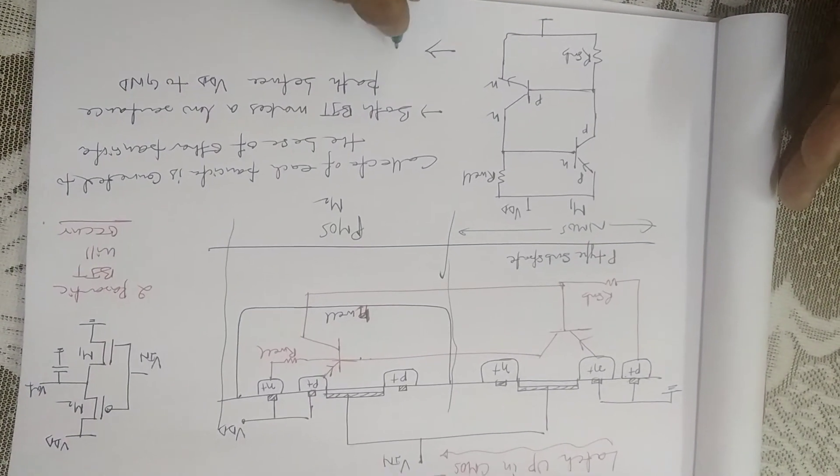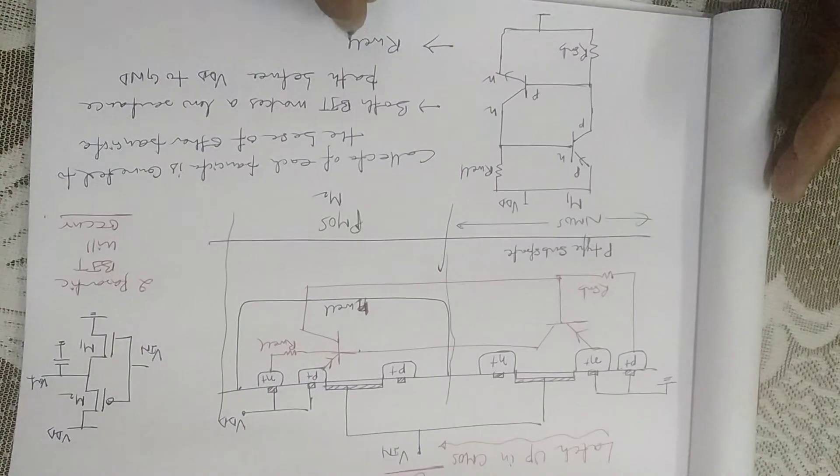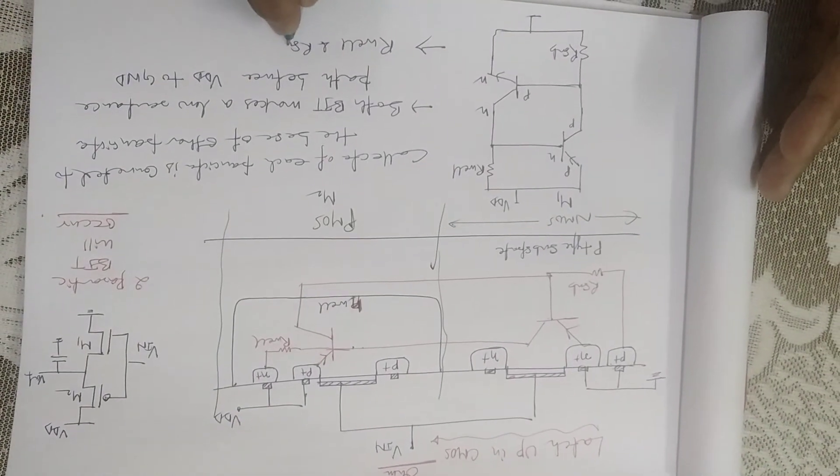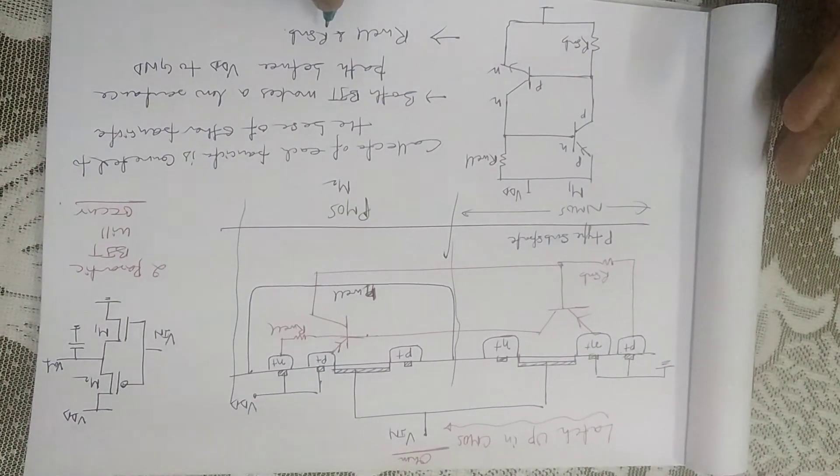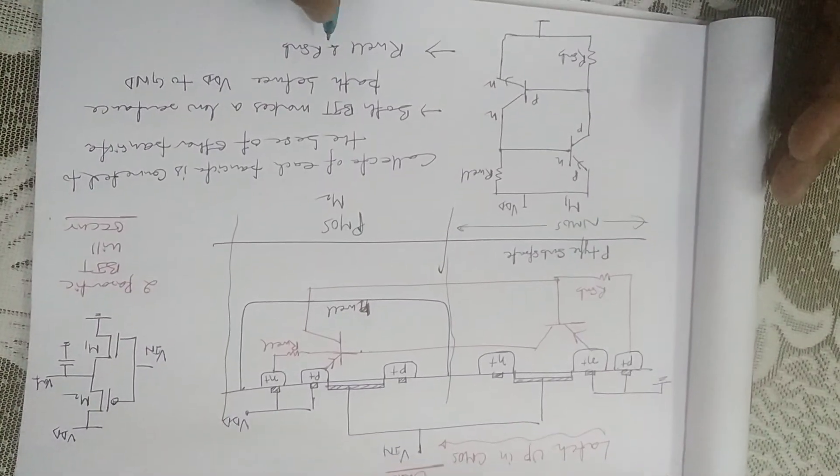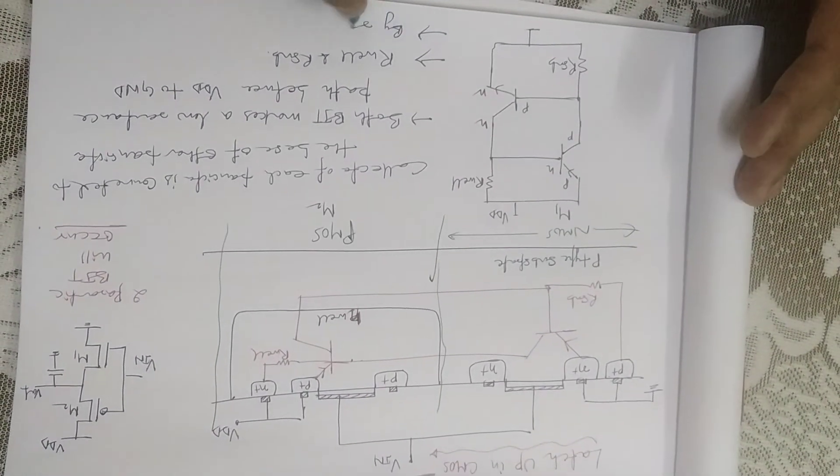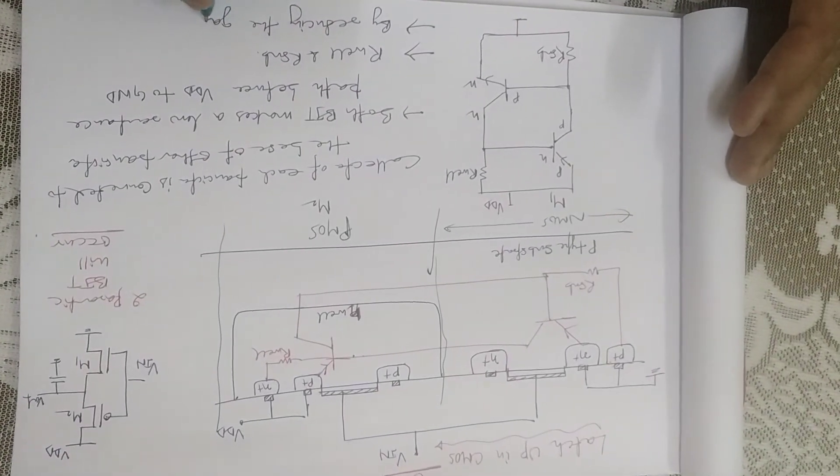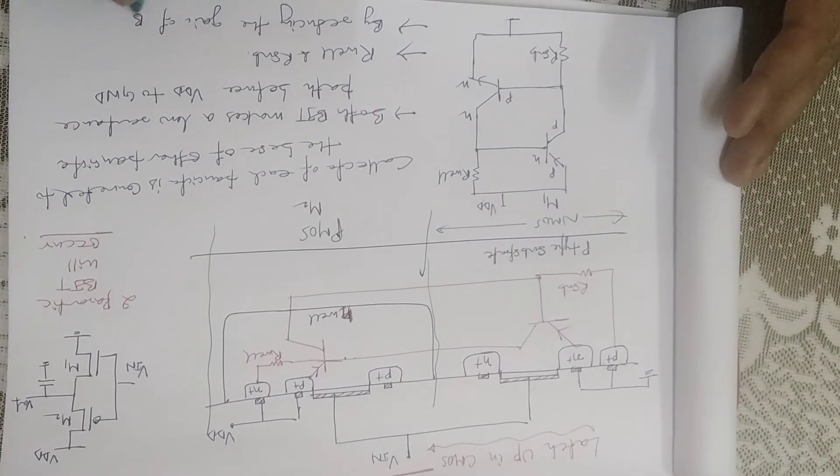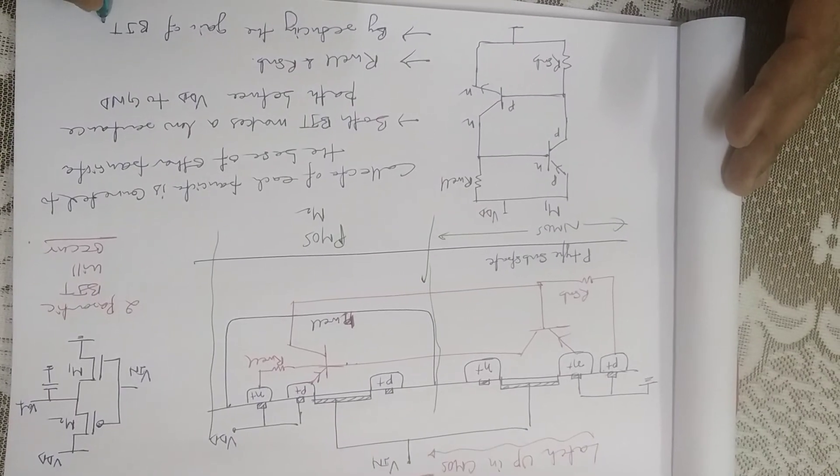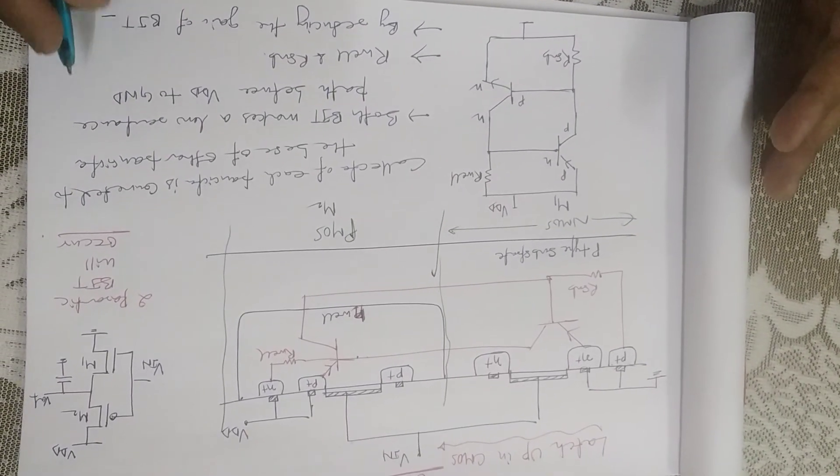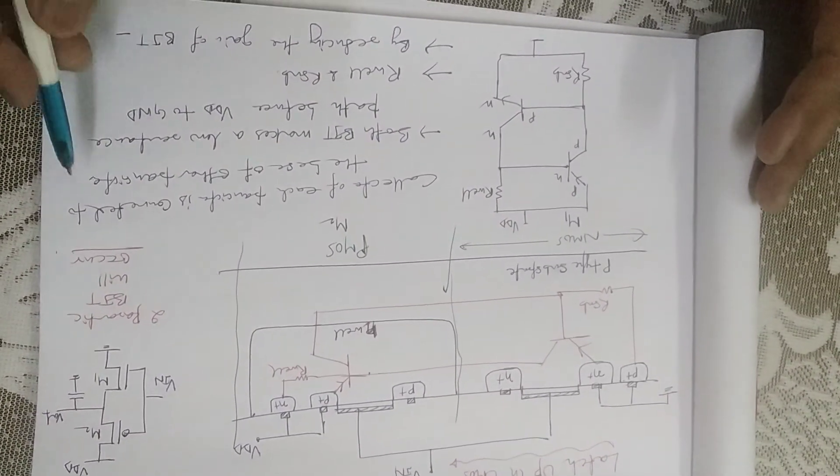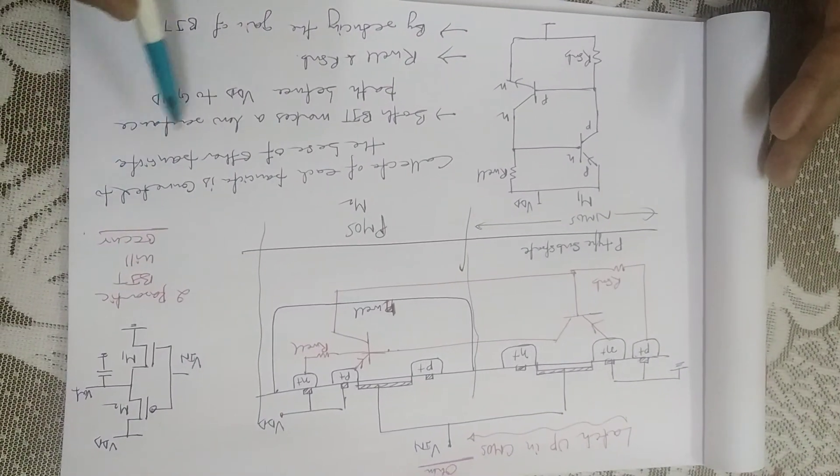To eliminate this type of thing, we have to reduce the value of R-well and R-substrate, and also by reducing the gain of BJT, we can eliminate the effect of bipolar junction transistor in latch-up.